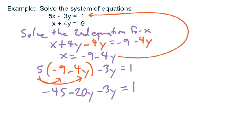Combine like terms, minus 20y minus 3y is minus 23y.